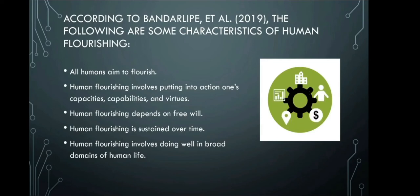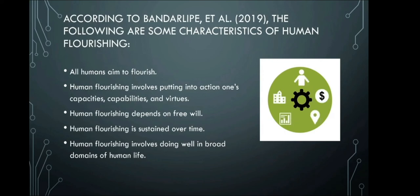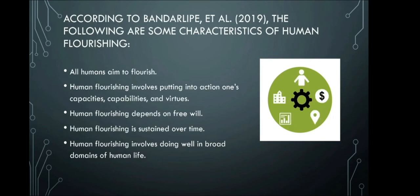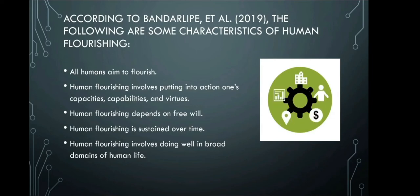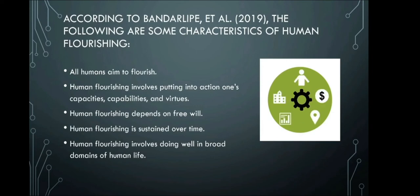Human flourishing depends on free will — no one forces you to progress in life; it is all about your free will. Human flourishing is also sustained over time: your growth as a human being doesn't stop when you grow old or graduate from school; you continuously flourish as you encounter new activities and experiences. Finally, human flourishing involves doing well in broad domains of human life — it is important to get out of the box and experience the entirety of being human outside your comfort zone.